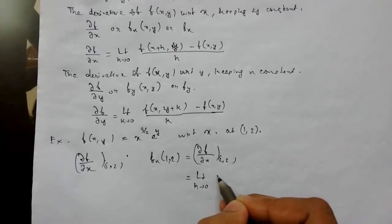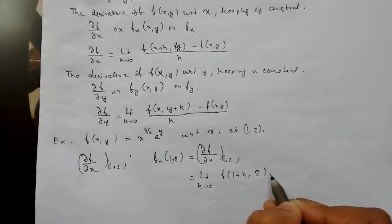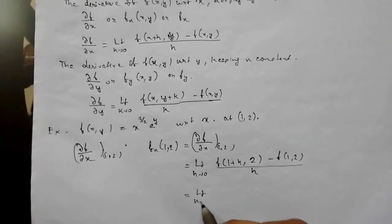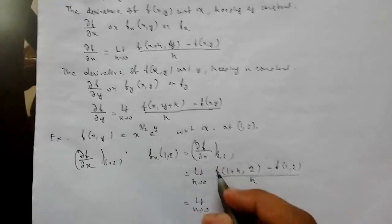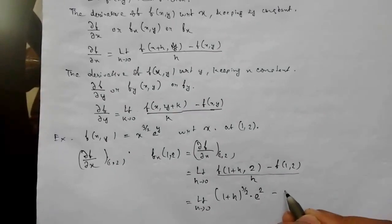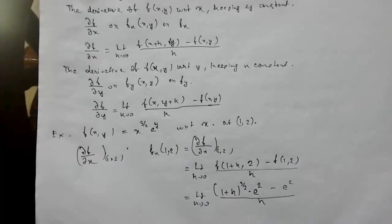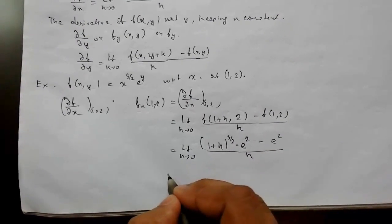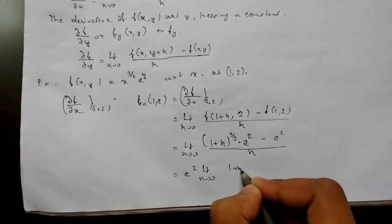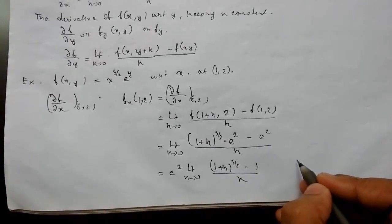We write this as the limit as h tends to zero of [f(1+h, 2) − f(1, 2)] / h. Substituting the function, this becomes the limit as h tends to zero of [(1+h)^(3/2) · e² − 1^(3/2) · e²] / h. Taking e² common, this is e² · limit as h tends to zero of [(1+h)^(3/2) − 1] / h.